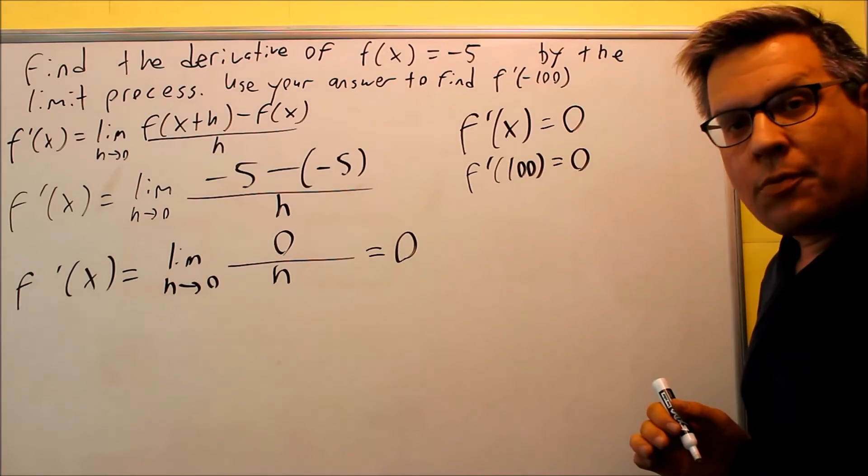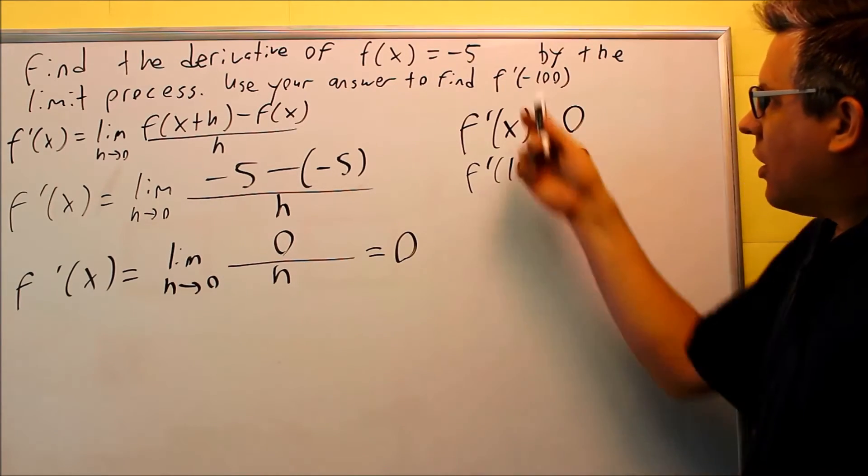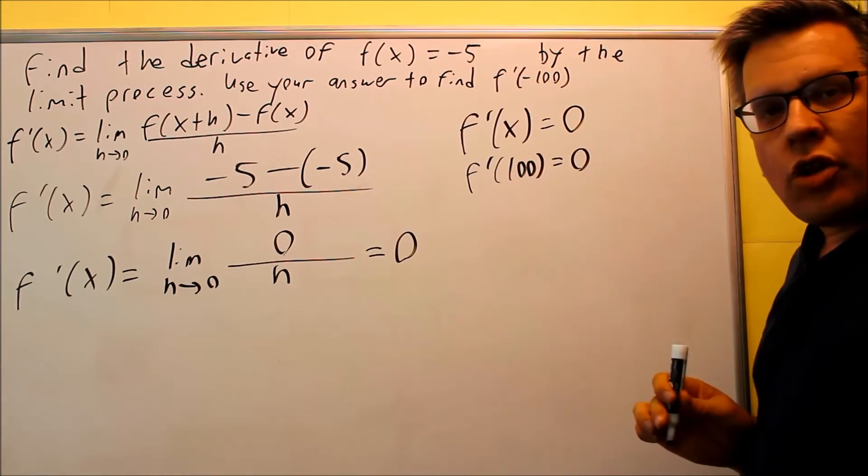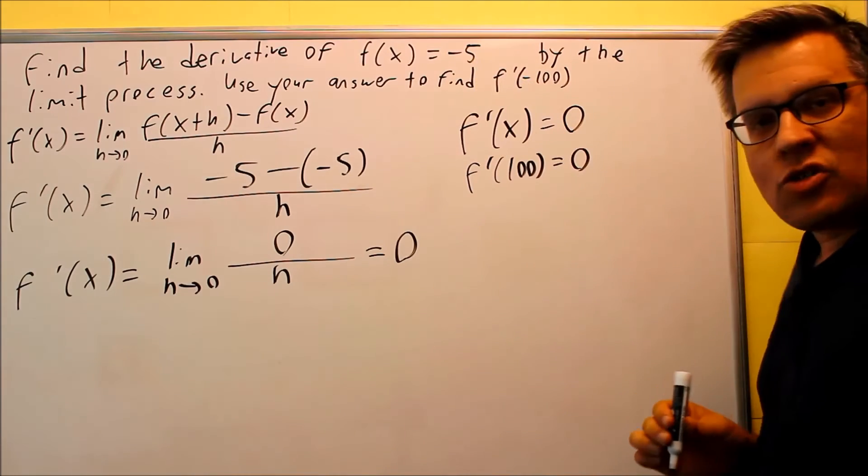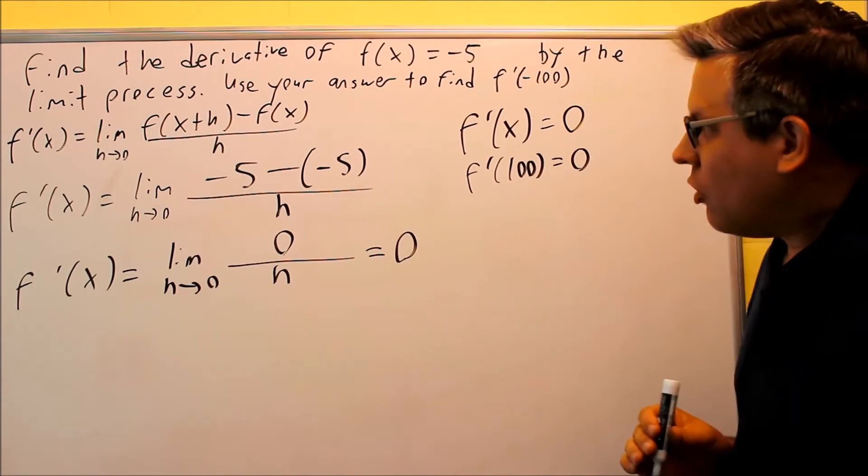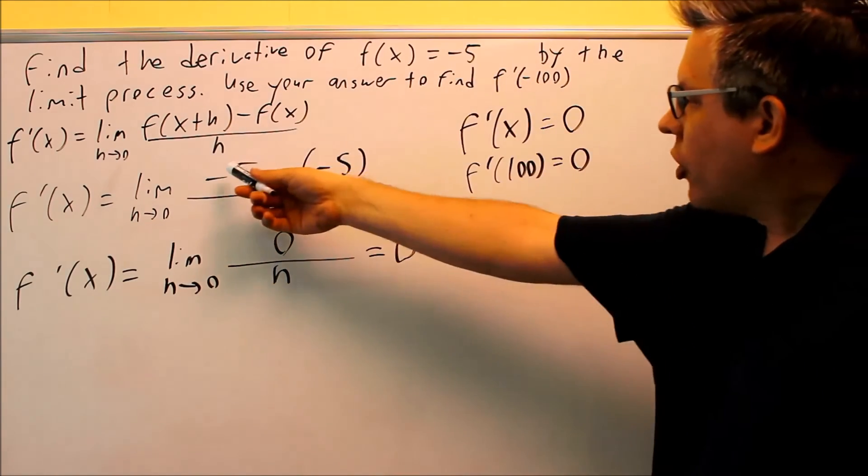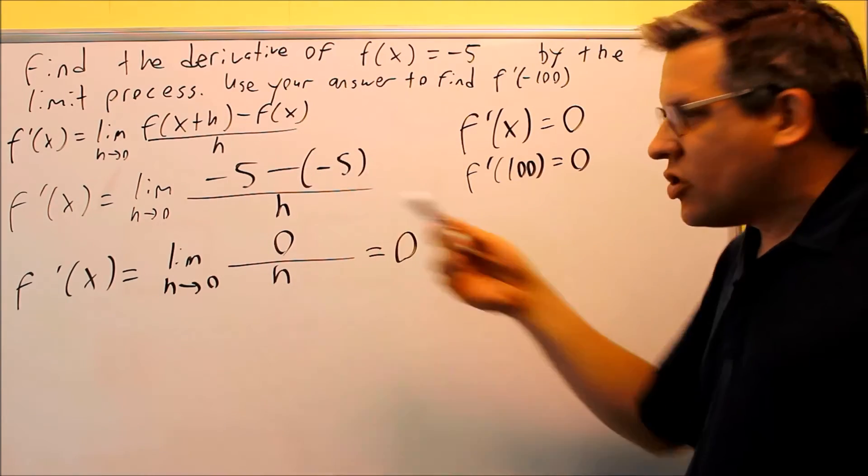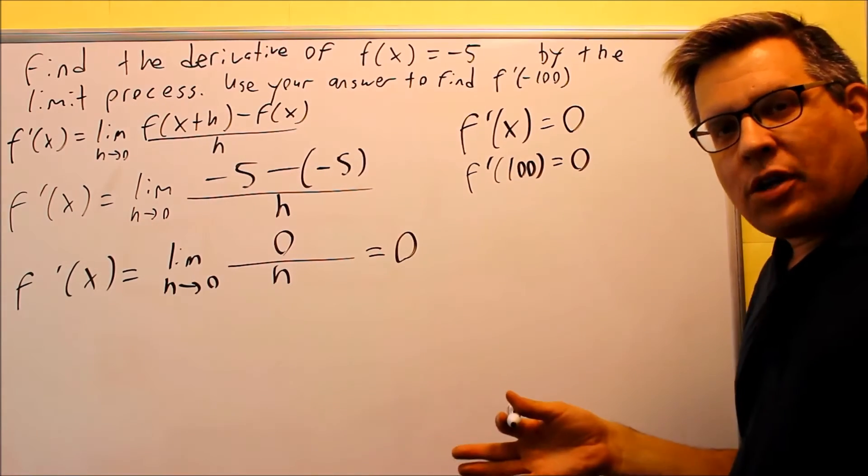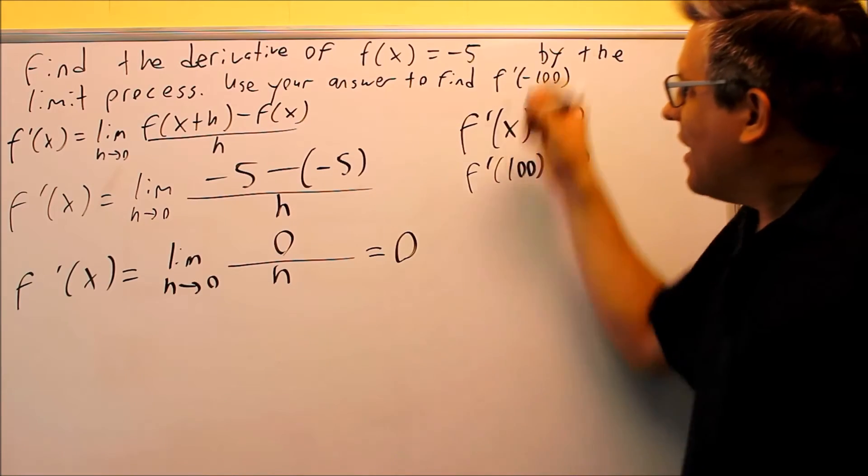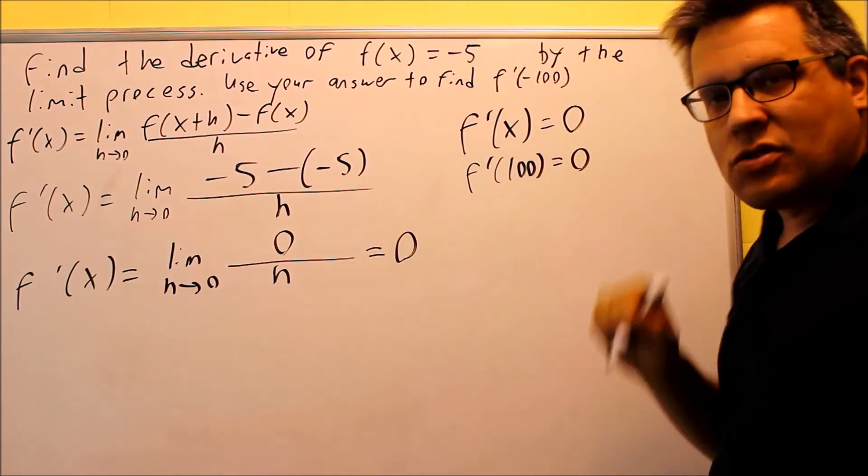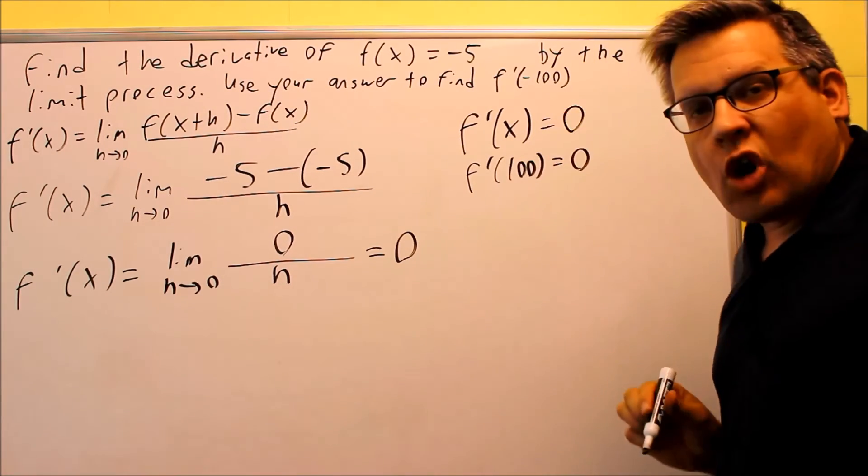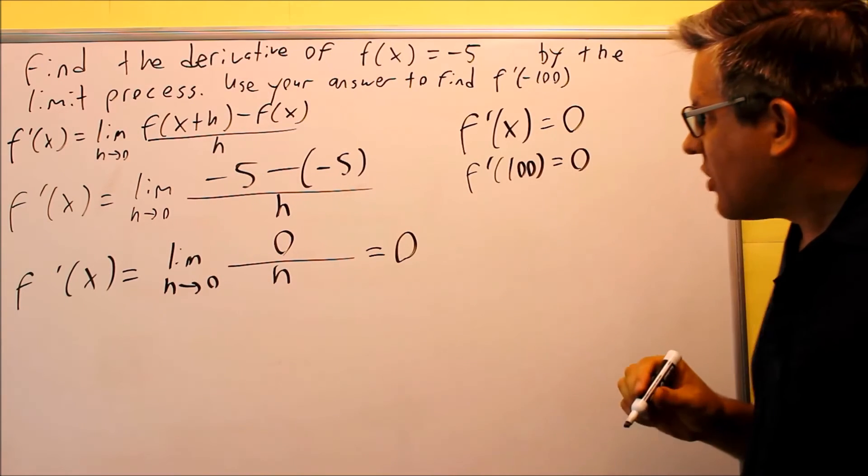Now, one thing I want to point out here is that, let's suppose that this was a different number. Let's suppose that f of x was, let's say, 4. Well, I would have 4 minus negative 4 here, I would still get 0. So what's happening here is you're noticing that any time I put in some kind of constant, my derivative is always going to be 0.